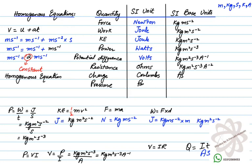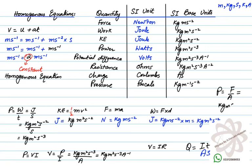The SI unit for pressure is Pascal. Using P = F/A, force in SI base units is kg ms⁻², and area is m². After cancellation, the SI base unit of pressure is kg m⁻¹s⁻². That covers the second lecture of the first topic: physical quantities and units.